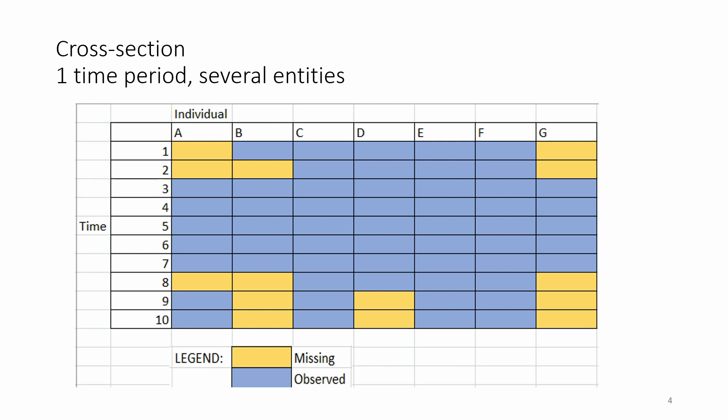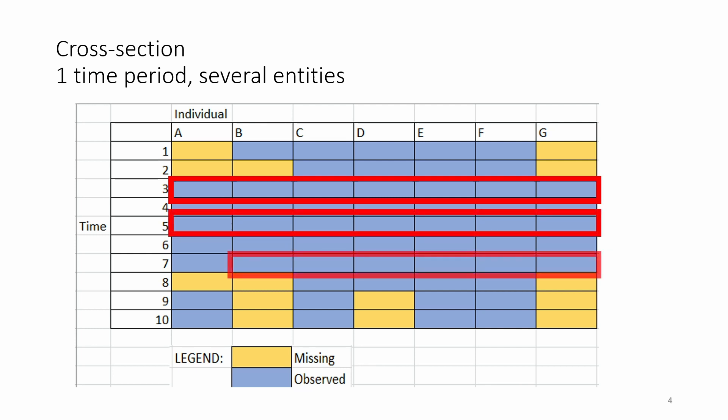A cross-sectional data format means that we observe several entities, but only for one time period. In this case it is a horizontal slice of data, or here, or here.